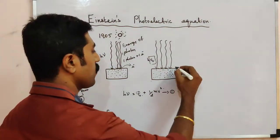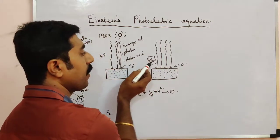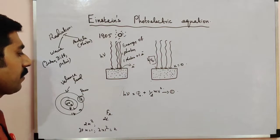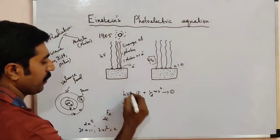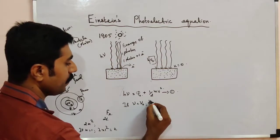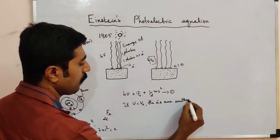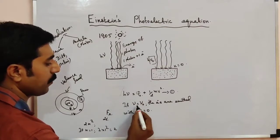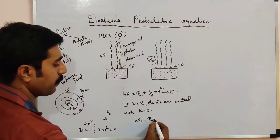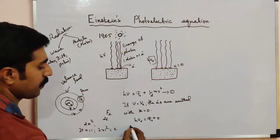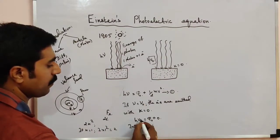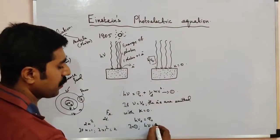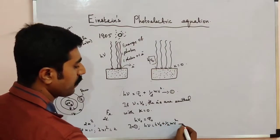When the frequency equals the threshold frequency, the electrons are emitted but with zero kinetic energy. So substituting into the first equation: hν = φ₀ + KE. When ν = ν₀ and KE = 0, we get φ₀ = hν₀. Substituting back: hν = hν₀ + ½mv². This is equation number 2 — Einstein's photoelectric equation.